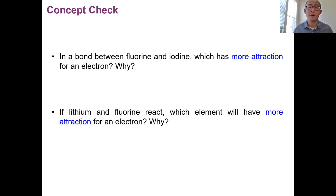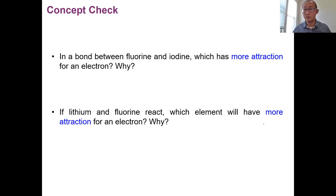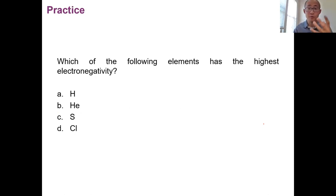Quick concept checks on electronegativity: in a bond between fluorine and iodine, fluorine is on top and iodine at the bottom — electronegativity increases bottom to top, so fluorine has greater electronegativity. If lithium and fluorine react, lithium is on the far left and fluorine on the far right — fluorine has greater electronegativity. Without memorizing numbers, understanding the trend lets you determine relative electronegativity using the periodic table.